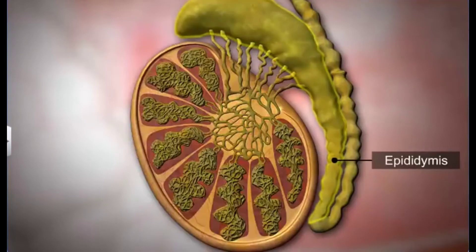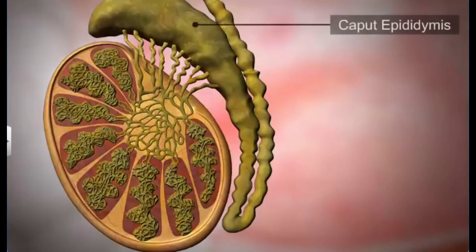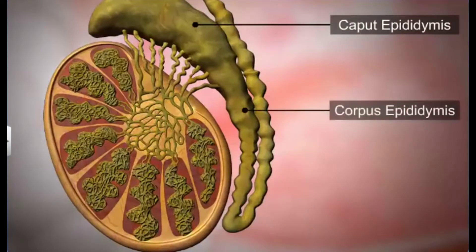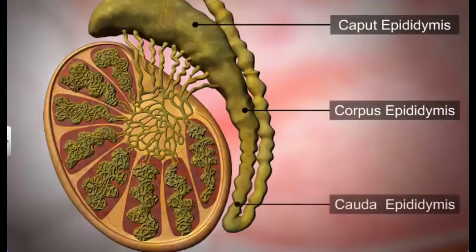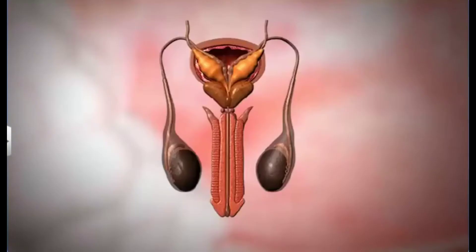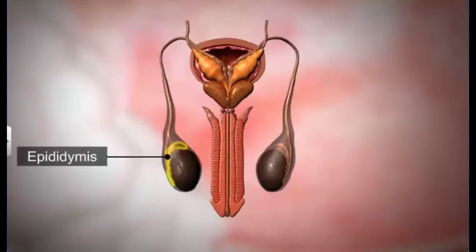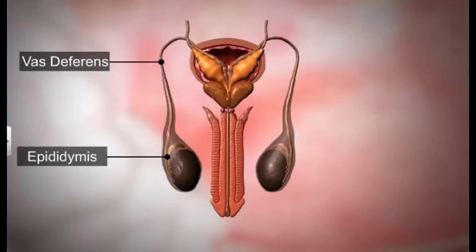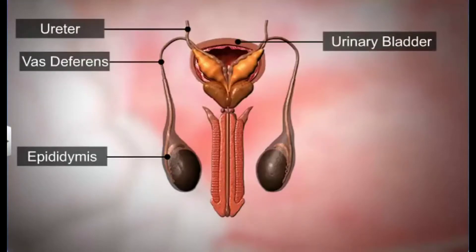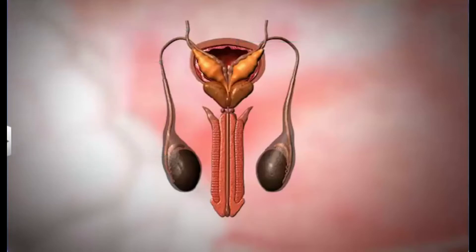The epididymis is a long, narrow, highly coiled tube present along the posterior surface of the testis. It is divided into three parts: the anterior caput epididymis, the middle corpus epididymis, and the posterior cauda epididymis. The epididymis stores sperms temporarily and nourishes them. The epididymis leads to the vas deferens.